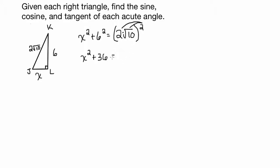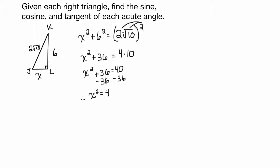So 2 squared is 4, and root 10 squared is just 10. We end up with x squared plus 36 equals 40. Subtract 36 from both sides, you end up with x squared equals 4, and taking the square root of both sides, x equals 2.